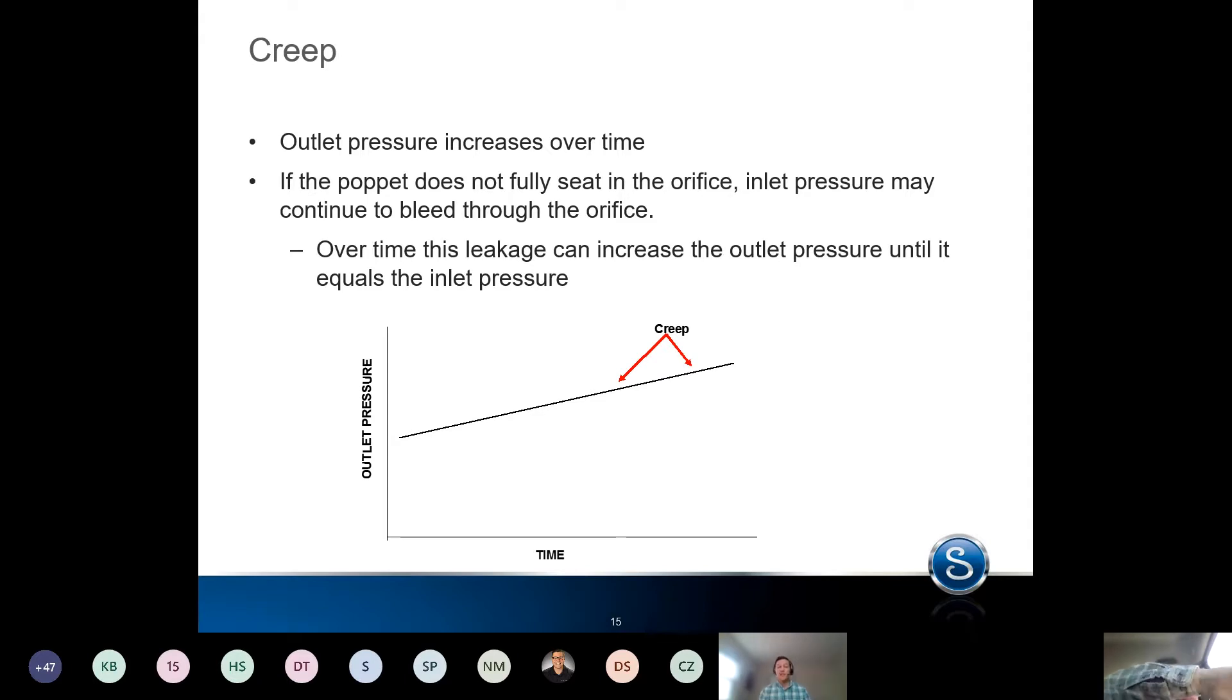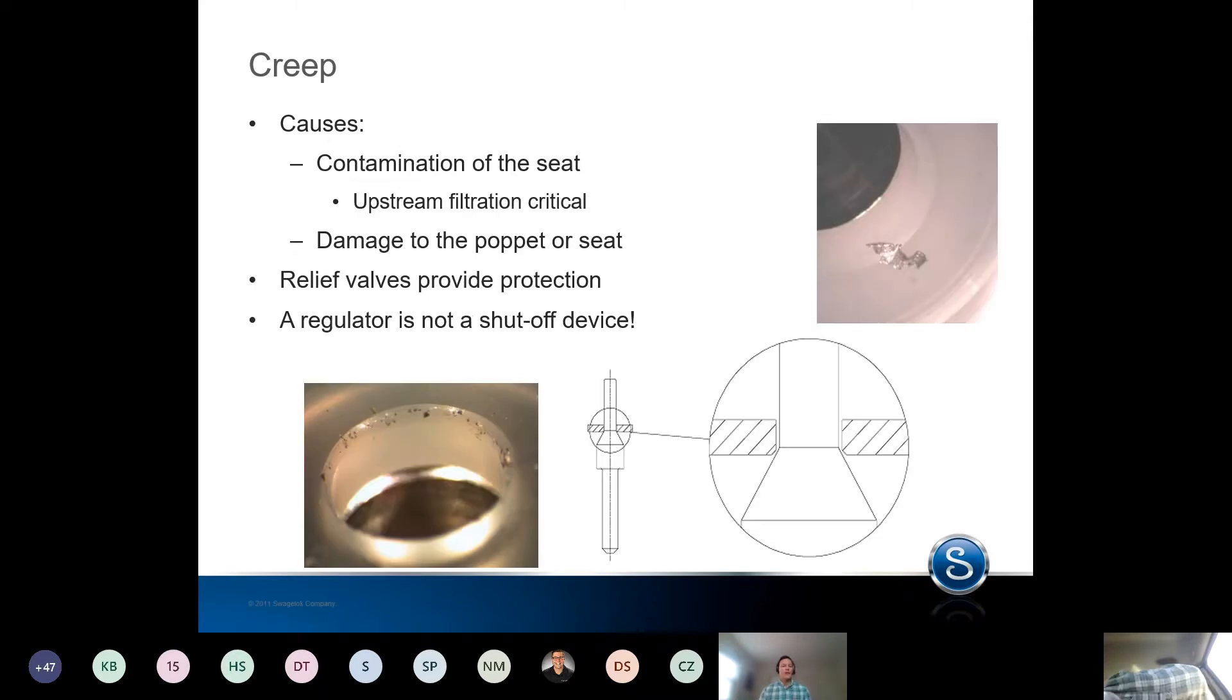So essentially a seat leak, right? And creep is typically caused by some sort of debris or damage on the seat.